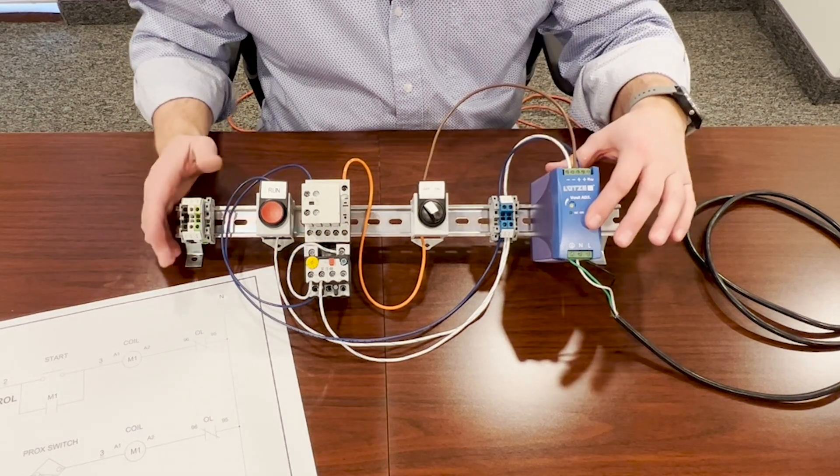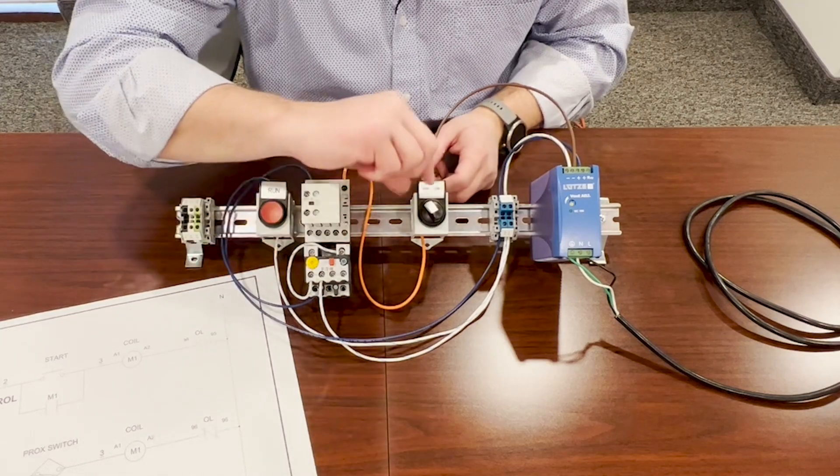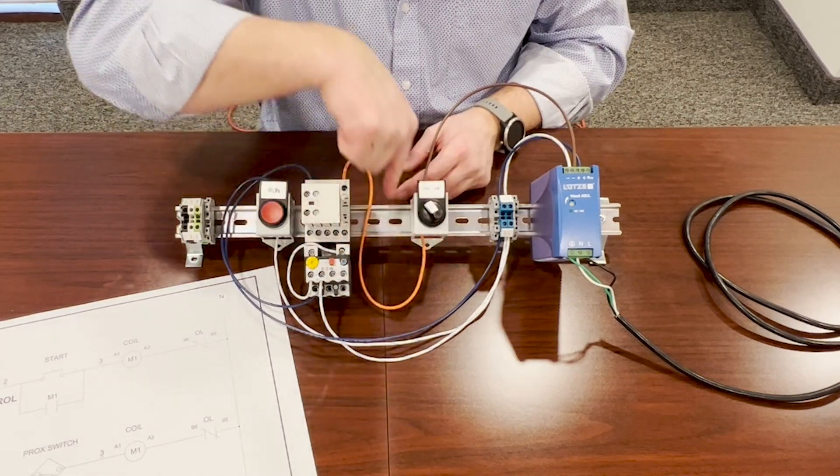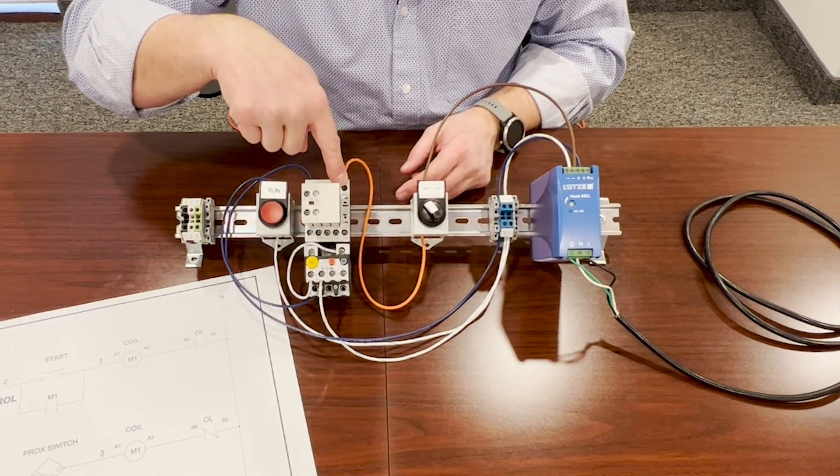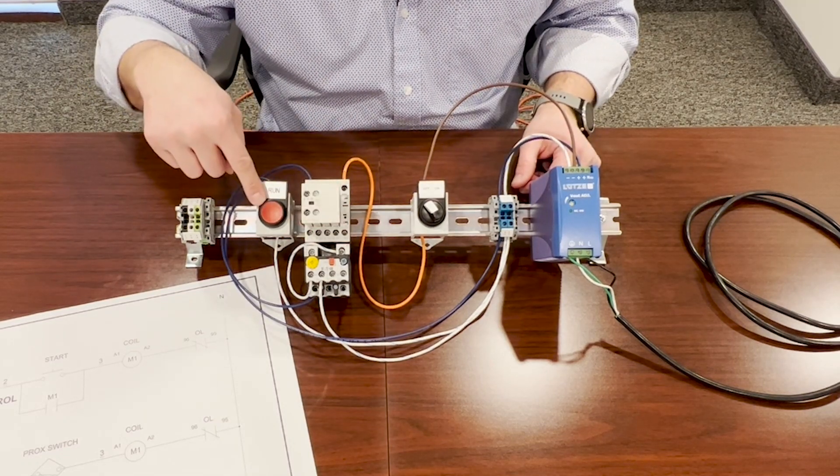So when we energize the power supply, 24 volts is going to go through this switch. When we turn the switch on, power is going to come up here to the coil on the motor starter. The motor starter will turn on, which is going to turn on the light bulb.